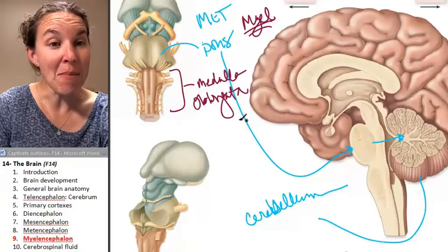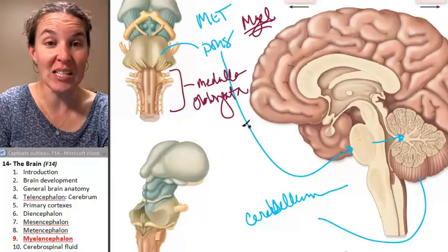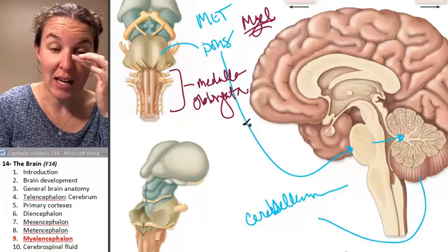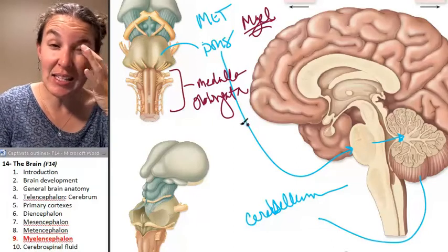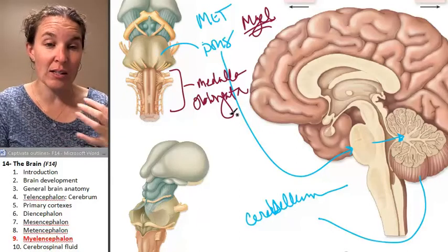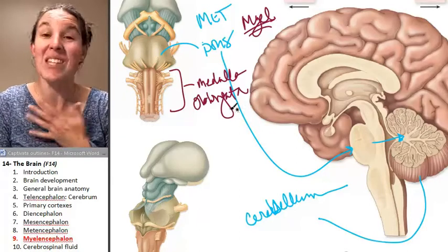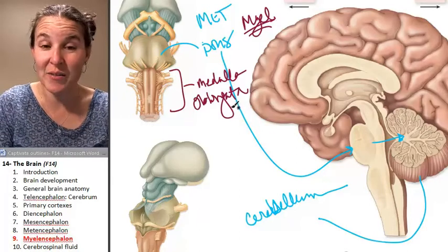Mike the headless chicken is an example of that. The medulla oblongata controls breathing and heart rate — it keeps you alive.